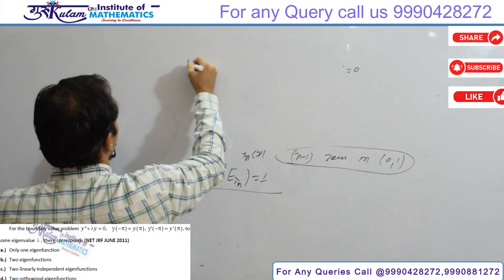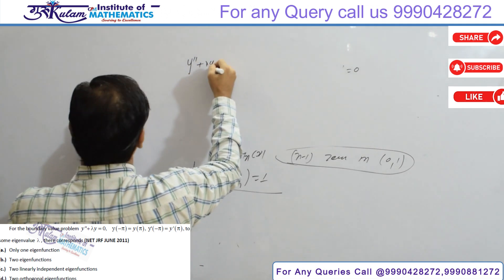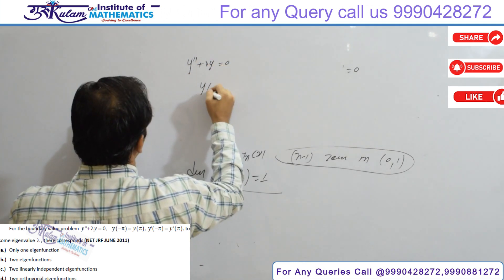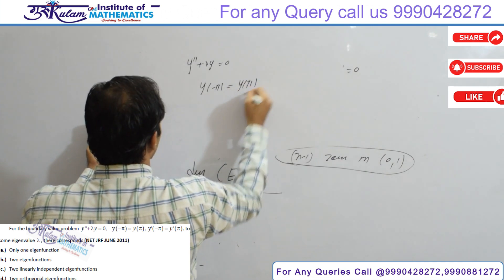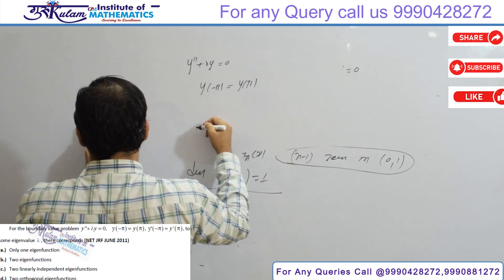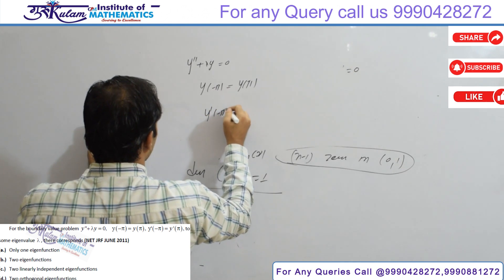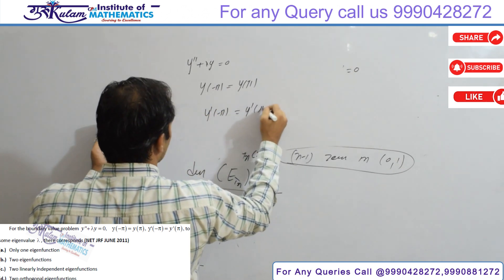I have a boundary value problem which is y double dash plus lambda y is equal to zero, and y at minus pi is equal to y at pi, and y dash at minus pi is equal to y dash at pi.